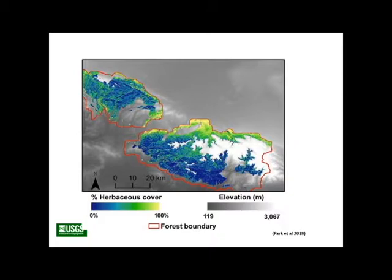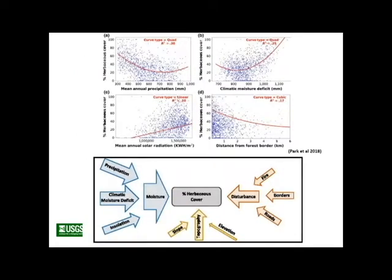A recent paper on the Angeles National Forest is relevant to type conversion. Park et al., published earlier this year, documented the pattern of herbaceous cover across the Angeles. Much of the front side is heavily dominated by shrublands, while other areas are more heavily dominated by herbaceous vegetation. The inference is that some of this is likely due to type conversion, though identifying the exact drivers from landscape patterns remains challenging.